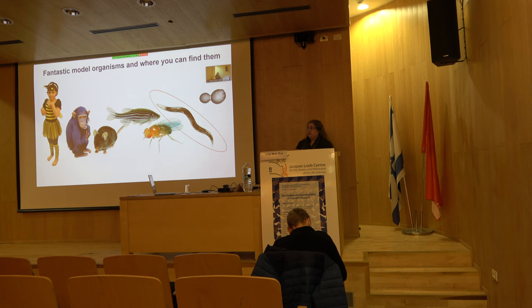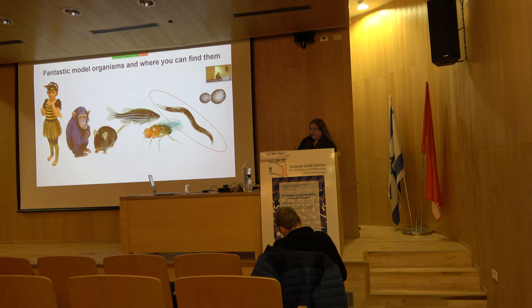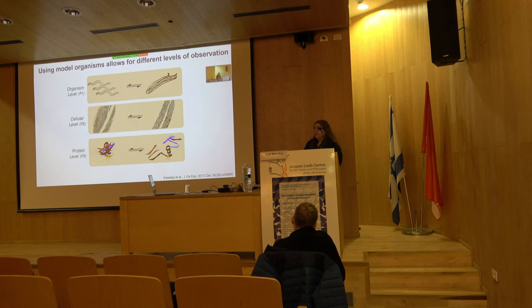One more advantage: C. elegans is transparent, so we can look inside and follow what's going on in living animals. When working in this model system — and I think it's probably a general concept for people working with model systems — you can work at different hierarchies or levels of complexity, and each level can give you different things in terms of what you're trying to get from the experiment.